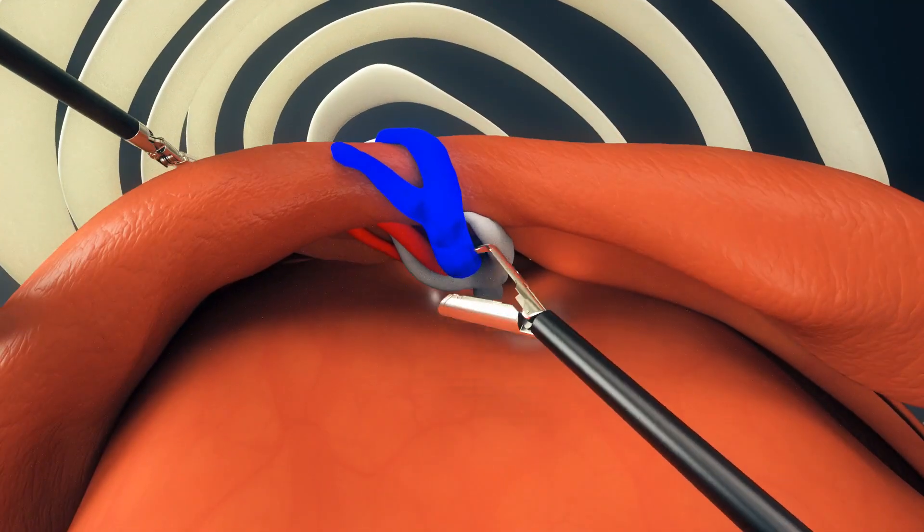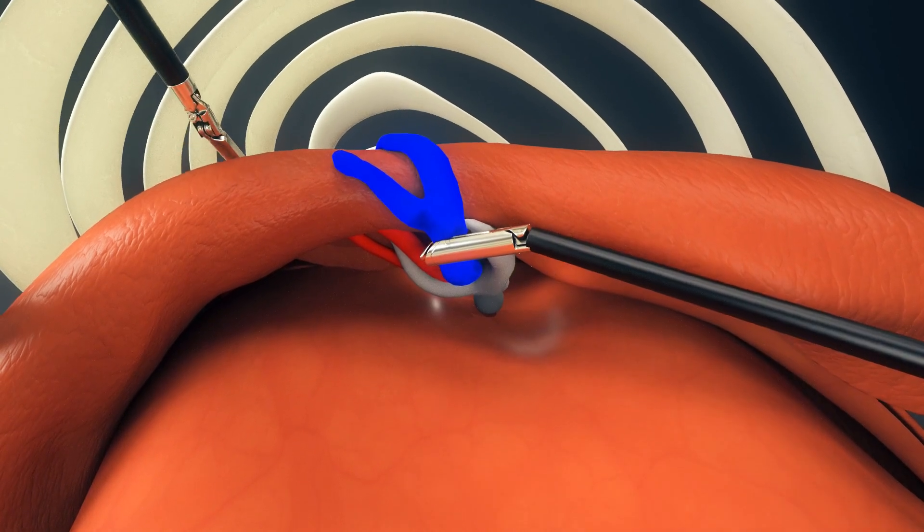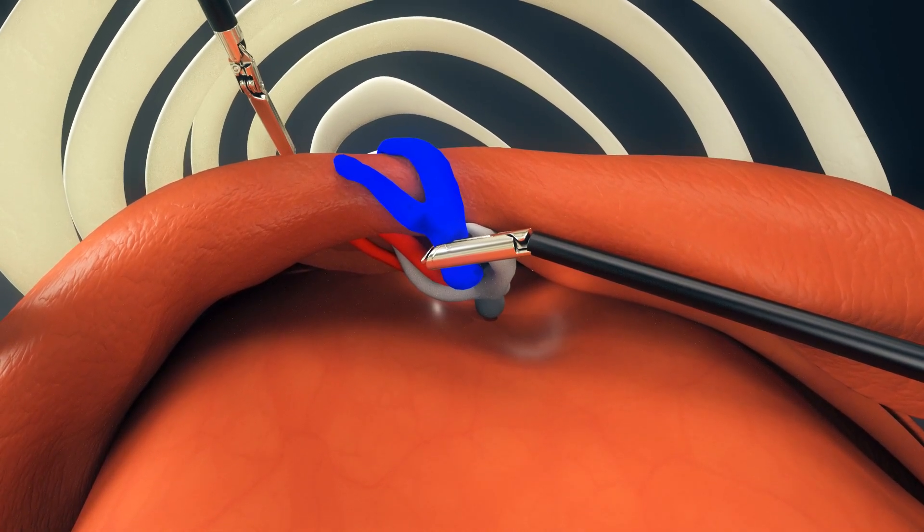These three vital structures must be identified and divided at every lobectomy using a special surgical stapler that the surgeon controls from the robotic console.